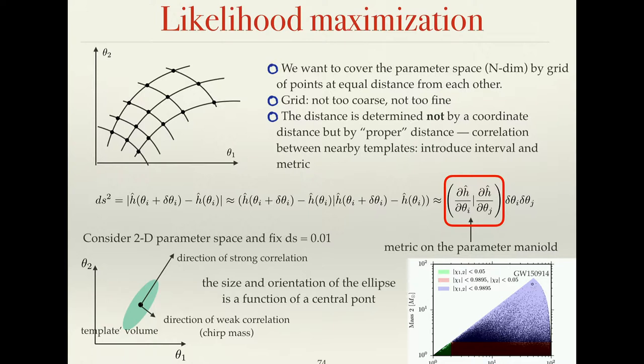This grid is like a fishnet: if it's too coarse, you will lose fish — you will lose your signal and not find it. If your grid is too fine, you start losing efficiency. You need to compute the likelihood at each point of the grid, and if it's too fine, you're doing way too many calculations and might wait weeks or months to determine whether there is a signal. You have to decide what is a tolerable level of coarseness.